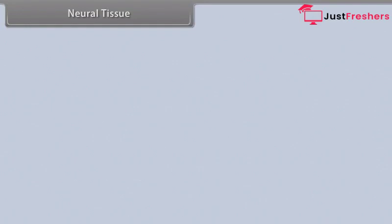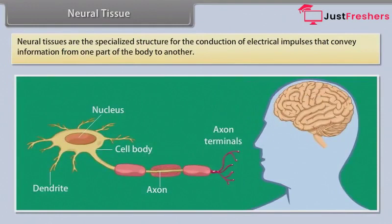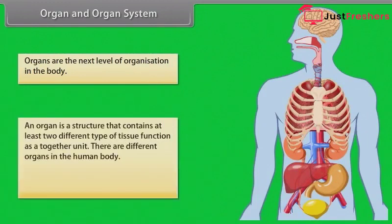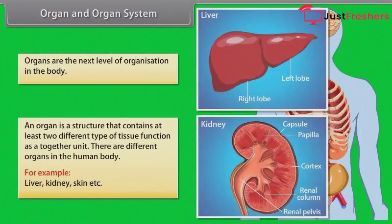Neural tissues are specialized structures for the conduction of electrical impulses that convey information from one part of the body to another. Organs are the next level of organization in the body. An organ is a structure that contains at least two different types of tissue functioning together as a unit. There are different organs in the human body — for example, liver, kidney, skin, etc.